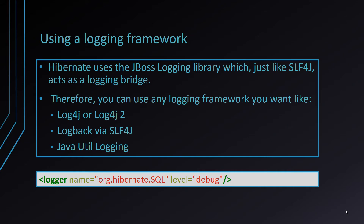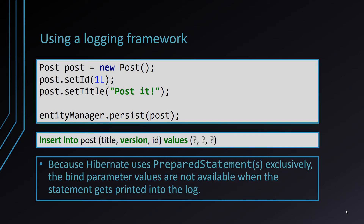Behind the scenes, Hibernate uses the JBoss Logging Framework, which acts as a bridge to the actual logging framework your enterprise application is using. So you can use any logging framework you want, like Log4J or Log4J2, LogBack via SLF4J, or Java Logging. When persisting a post entity, Hibernate is going to output the following SQL Insert statement. By default, statements are logged using placeholders. Later, we are going to see how to print bind variables as well.